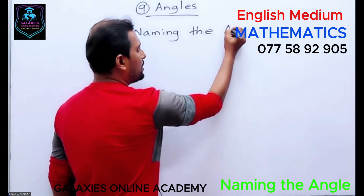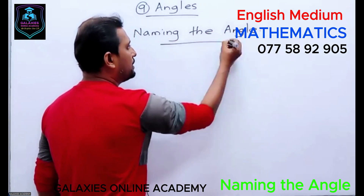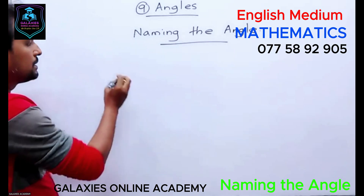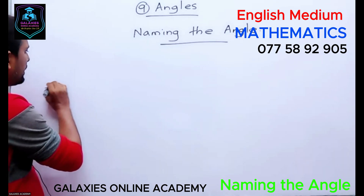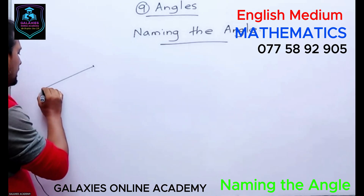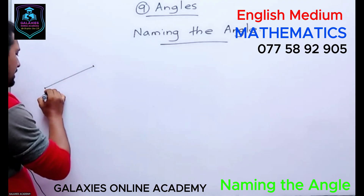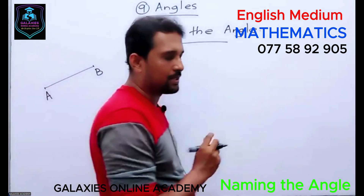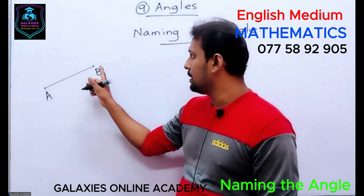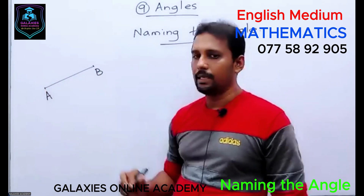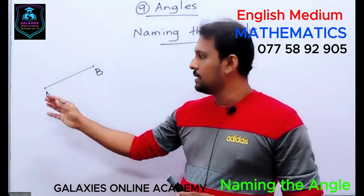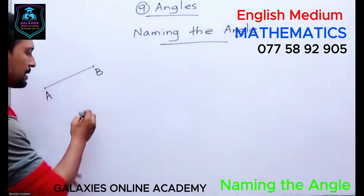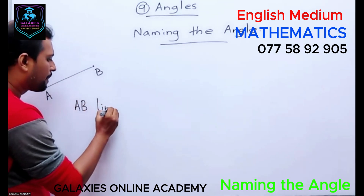Naming the angle. Remember a straight line segment — I can draw one like this. This straight line can be named using two capital English letters, one on either side. The two letters you can see here are A and B, so this straight line segment we can introduce as AB or BA.